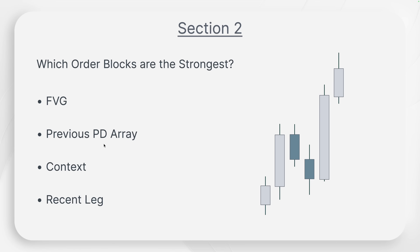Then after the previous PD array, we see context, because that relates to where the order block actually forms. It always needs to be in some kind of context. Then the last one is the recent lag — we are always looking at order blocks in the most recent lag. They are the strongest ones. The steps right here might be a little bit vague, so to take away all the confusion, let's dive into the chart.